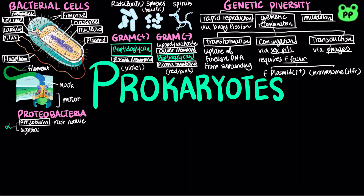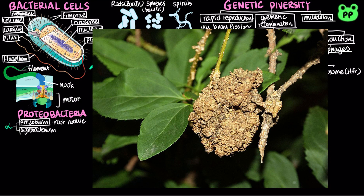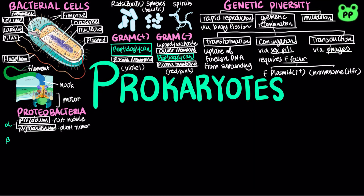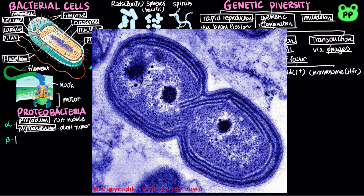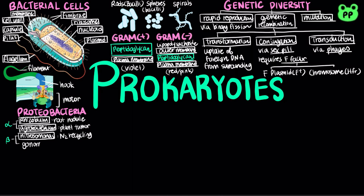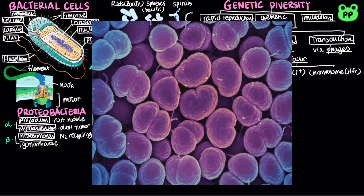Another genus called Agrobacterium produces tumors in plants, which has been used to create genetically modified plants. Beta-proteobacteria includes Nitrosomonas, which are soil bacteria that play an important role in nitrogen cycling by oxidizing ammonium, producing nitrite as a waste product. Beta-proteobacteria also includes the species that causes gonorrhea.